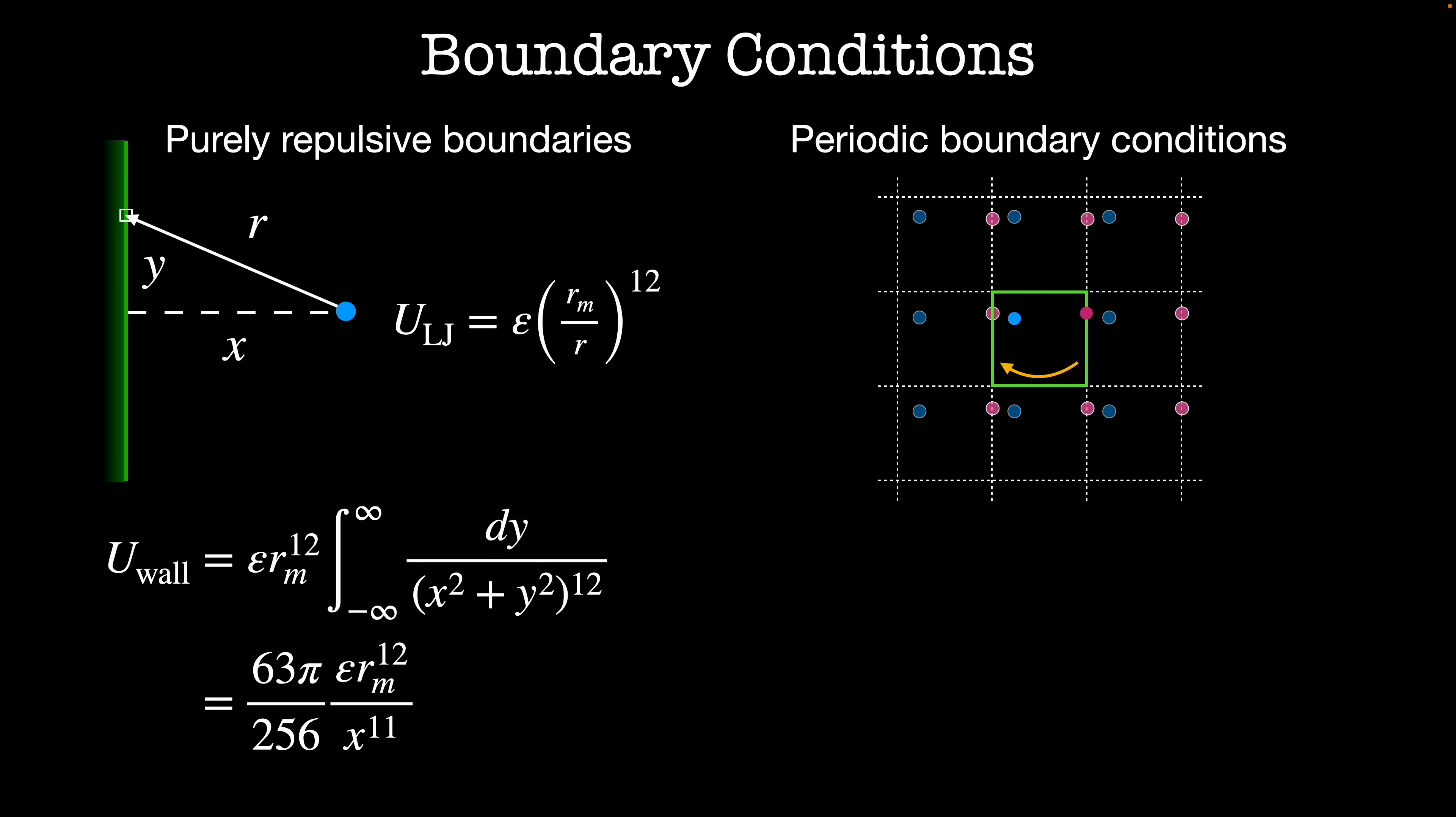If we want to run a simulation with periodic boundary conditions, we need to change two things from our initial simulation setup. First, we need to calculate the potential coming from all of the neighboring boxes. And then we need to update the trajectory of the system so that when a particle leaves the simulation box from one side, it gets teleported back inside.